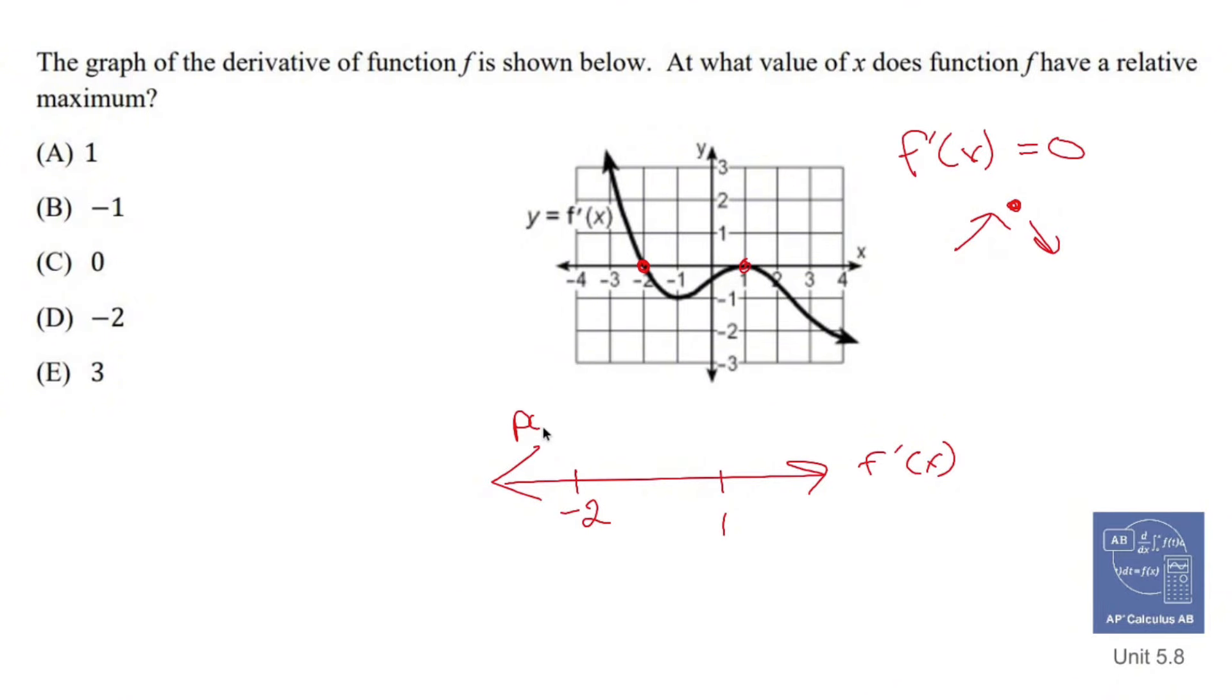To the left of negative 2, I'm in positive land. And from negative 2 to 1, I'm below the x-axis, and from 1 on I'm also below the x-axis.